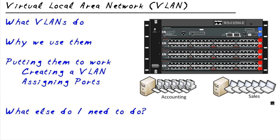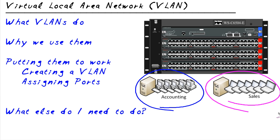So what about virtual local area networks? Why do we need them? One day the accounting department grew and they have all these PCs, and the sales department grew. What they had in mind was they want accounting to be on the network and sales to be on the network, but not on the same network. And somebody said, no problem — we'll just get two switches. Here's an example of a really big switch with about 144 Ethernet gigabit ports on it. We could just plug everybody in, but then accounting and sales wouldn't be separated — they'd be on the same local area network. How do we separate them?